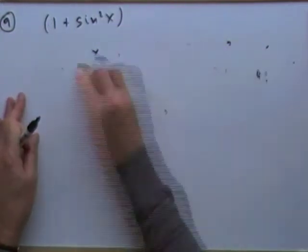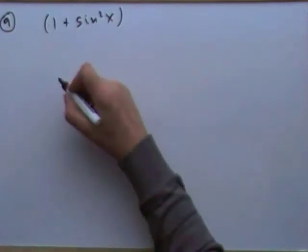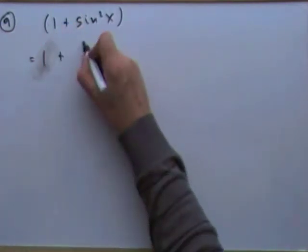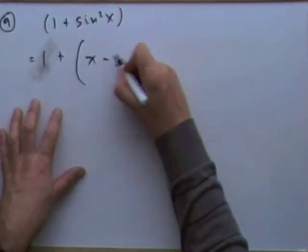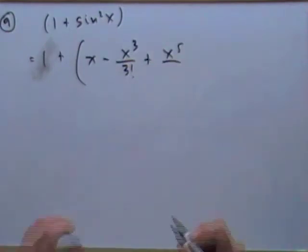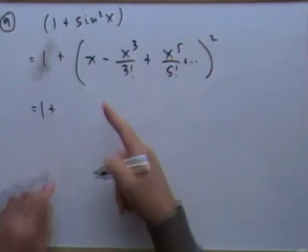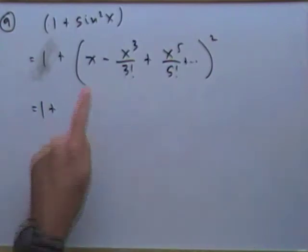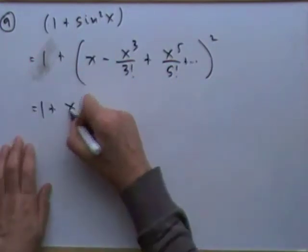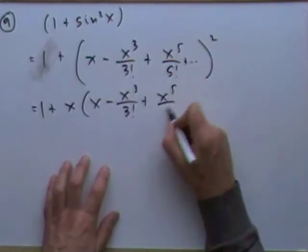Since it just says 'obtain' without specifying derivatives, I'll do it algebraically. The function equals 1 + (sin x)², and sin x = x - x³/3! + x⁵/5! + ··· Squaring that infinite bracket means each term takes its turn multiplying the rest. I probably don't need to go beyond x⁵ for the first three terms.